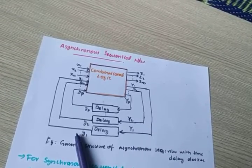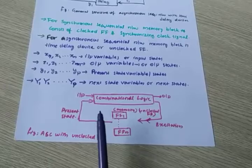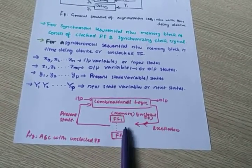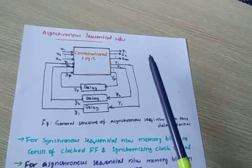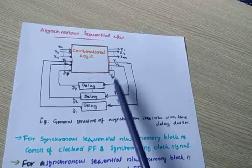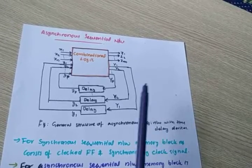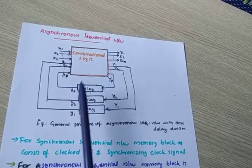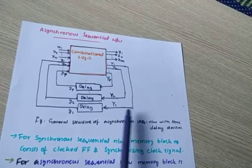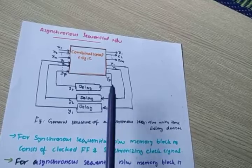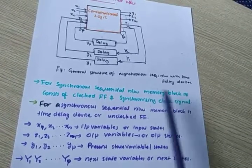When small y1 equals capital Y1 — present state equals next state — the system is stable. This is also the general structure: combinational logic with the excitation output. The excitation is also called the next state because the output taken as excitation to the delay element means excitation and next state are the same. So while drawing the state table, the excitation table and transition table are the same for this kind of circuit when using a single delay element.